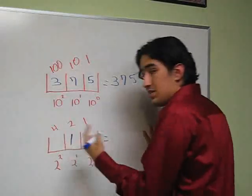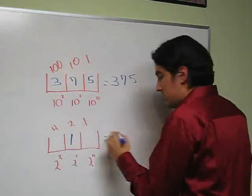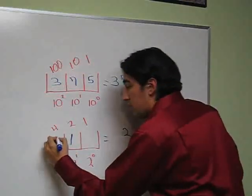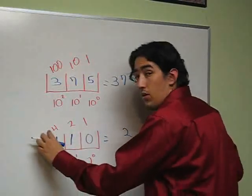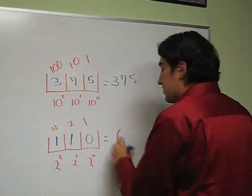Simply, if I put a 1 in the second place, I just have 2. If I add a 1 in the third place and zeros everywhere else, I would have 4 plus 2, which equals 6.